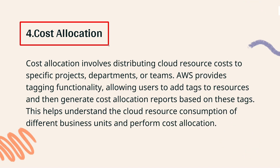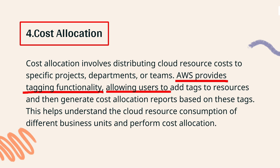Cost allocation involves distributing cloud resource costs to specific projects, departments, or teams. AWS provides tagging functionality, allowing us to add tags to resources and then generate cost allocation reports to understand the cloud resource consumption of different departments.